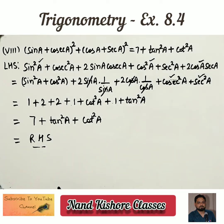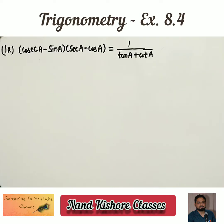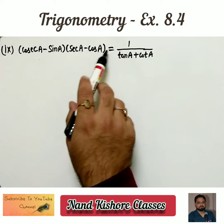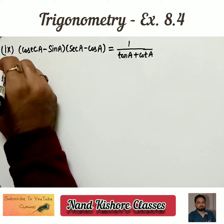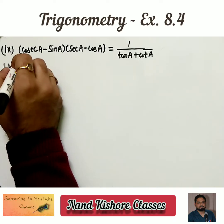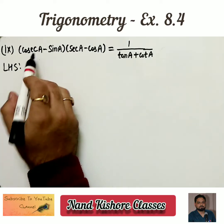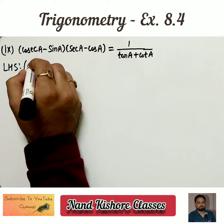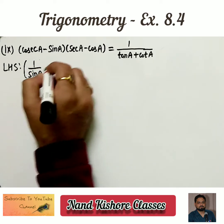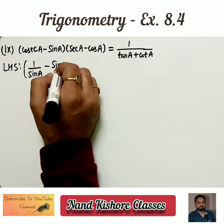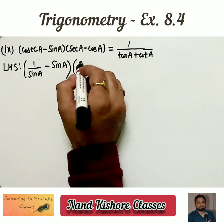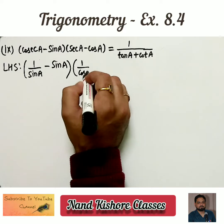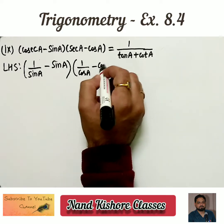Let us continue with the 9th part. Look at the statement: cosecant a minus sin a, times secant a minus cos a, equals 1 by (tangent a plus cotangent a). Let us take the left hand side. Cosecant a I can write as 1 by sin a, minus sin a as it is. And secant a I can write as 1 by cos a, minus cos a as it is.